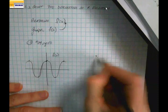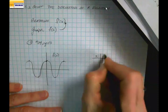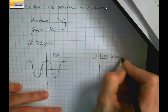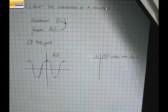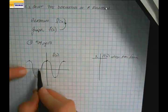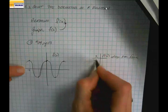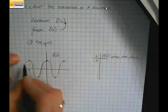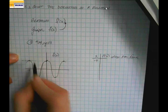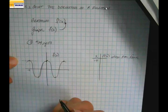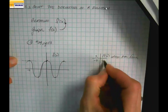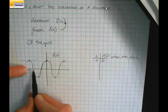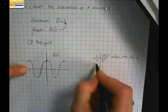Let's create a table with the same x values, where the first derivative equals the slope of the tangent line. When x is negative 4, the slope of the tangent line is a horizontal line, giving a slope of 0. So the first derivative at x = -4 is 0.